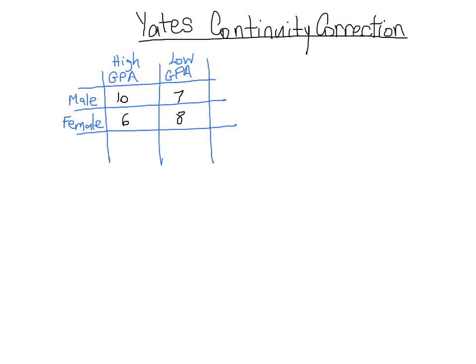In this video we'll be looking at how to use the Yates continuity correction in order to do a chi-squared test where we only have a small 2 by 2 table. So we only have two rows, two columns.